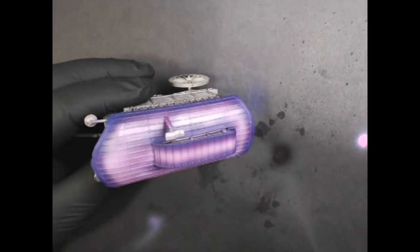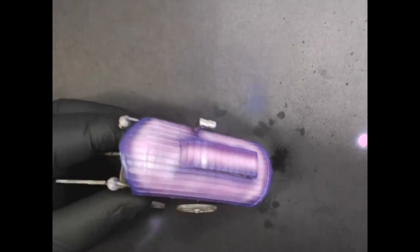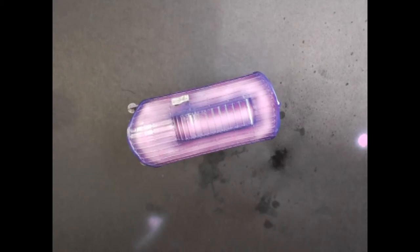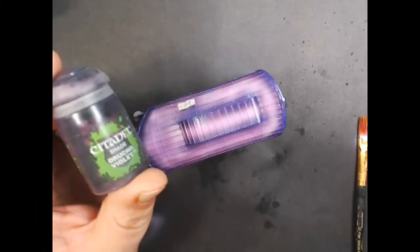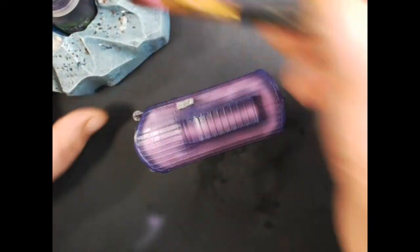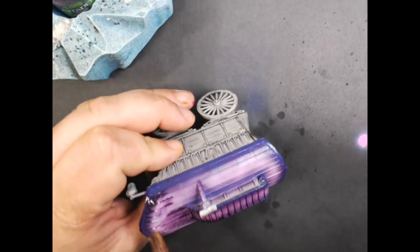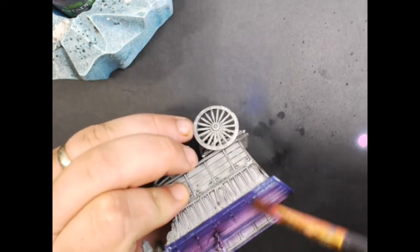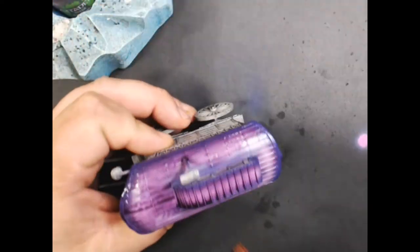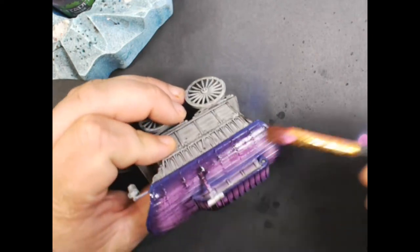Next up, we're going to spray just the top with Vallejo Gloss Varnish and this will protect it against the wash which we're about to do. So this is Citadel Druchii Violet Wash and we're just going to coat the whole purple top. This will take some of that pink out and also help show the details in the roof.